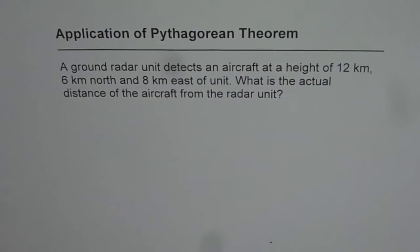Here is another application of Pythagorean theorem. A ground radar unit detects an aircraft at a height of 12 km, 6 km north and 8 km east of unit. What is the actual distance of the aircraft from the radar unit?